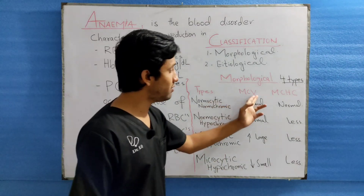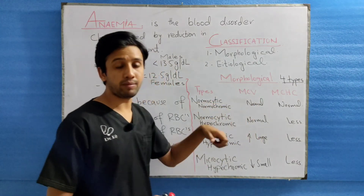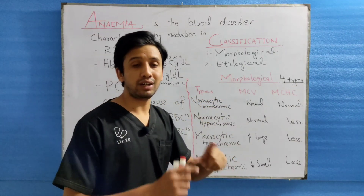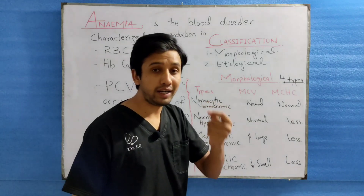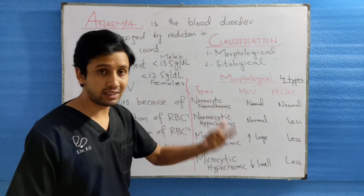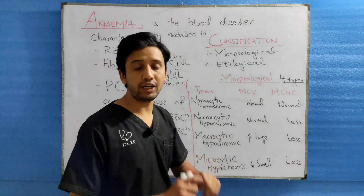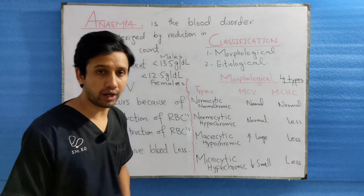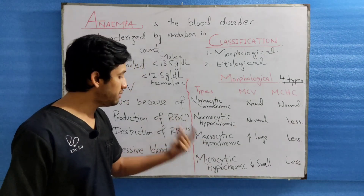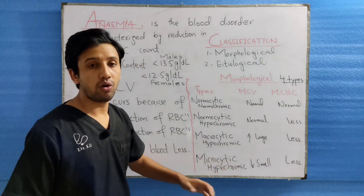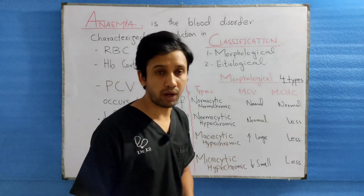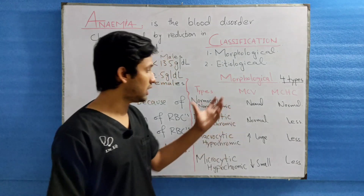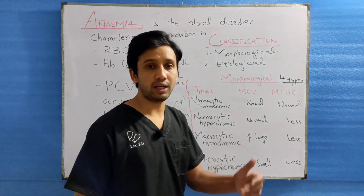Now regarding the MCV value — as discussed in my previous lecture — the normal value of MCV ranges between 80 to 96 femtolitres, or in another unit, 80 to 100 cubic microns. When it is less than 80 cubic microns, the anemia is said to be microcytic. When it is greater than 100 cubic microns, the anemia is said to be macrocytic. These are the MCV values corresponding to each type of anemia.